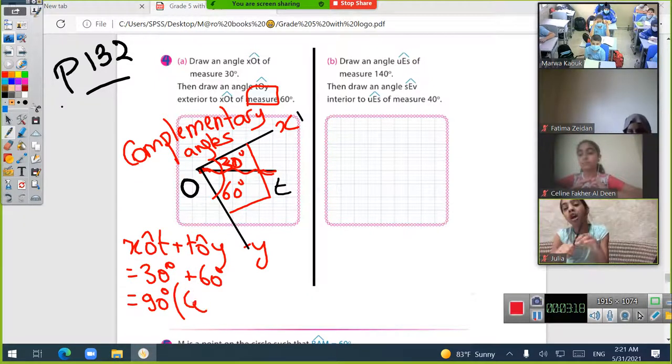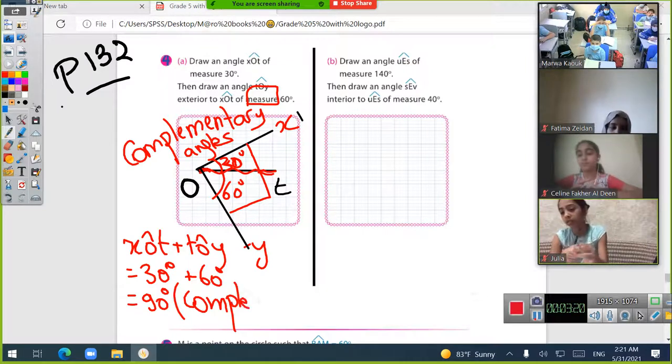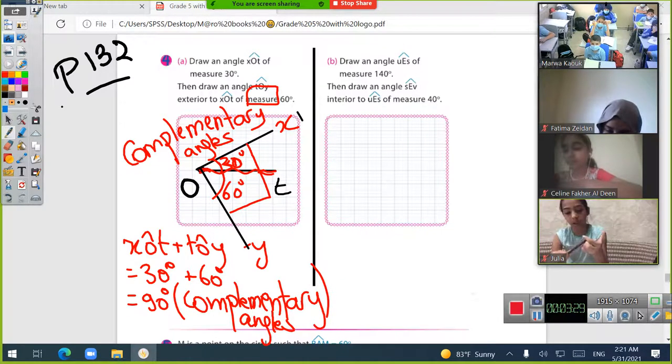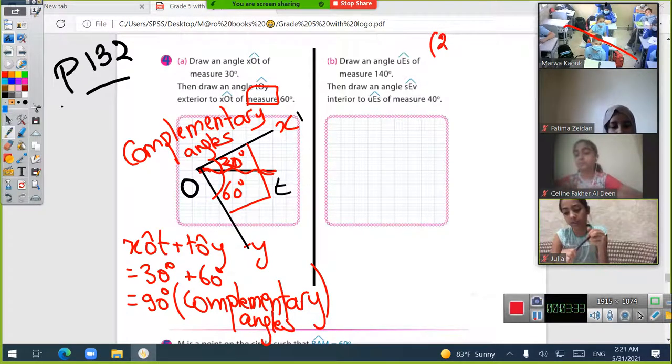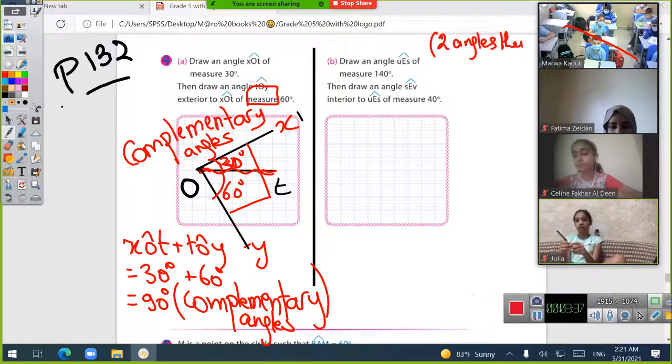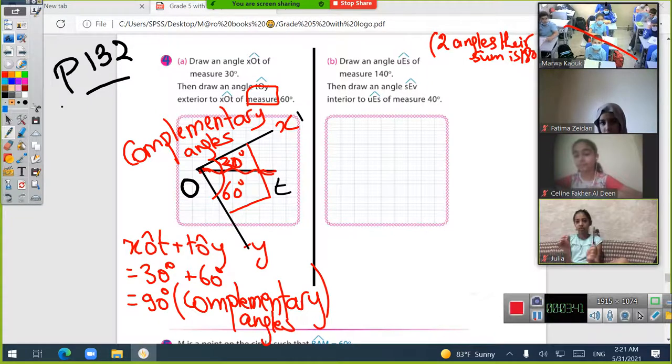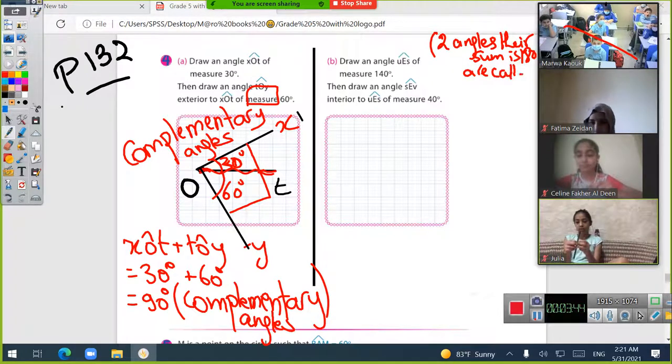Two angles, if their sum is 180, we call them supplementary angles. Two angles whose sum is 180 are called supplementary.